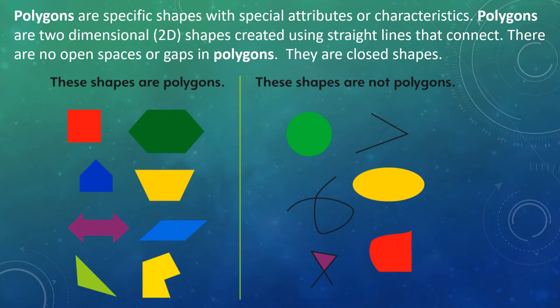To help you visualize this, here are some examples of polygons and not polygons. On the left side of this T-chart, these shapes are polygons — they are two-dimensional, they have all straight lines, there are no spaces or gaps, and they are all closed shapes. On the right side of this T-chart, you see some examples of shapes, but these shapes are not polygons. Keep that in mind today as we continue learning about polygons. We are going to learn their special names, so instead of just calling the shapes three-sided or having three angles, we are going to learn their true names.